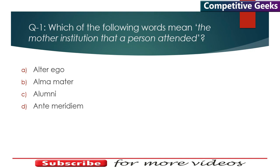Question 1: Which of the following words mean 'the mother institution that a person attended'? The answer is Alma mater. Alter ego means one's other self, distinct from one's original personality. Alumni means students of a particular institution - plural and singular. Ante meridiem means a.m., the time between midnight and noon, like 6 a.m. or 7 a.m.